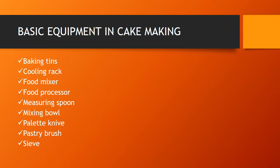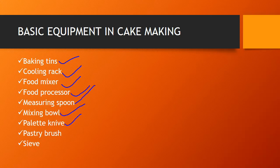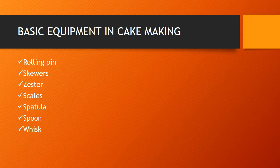Some of the basic equipment used in cake making includes: the baking tin, measuring spoon, mixing bowl, palette knife, pastry brush, sieve, rolling pin, skewers, zesters, scales, spatula, spoon, and whisk.